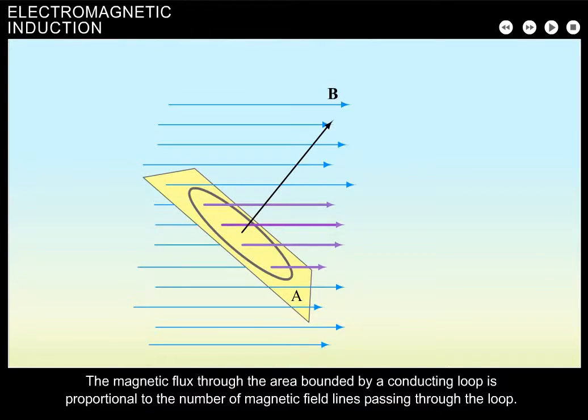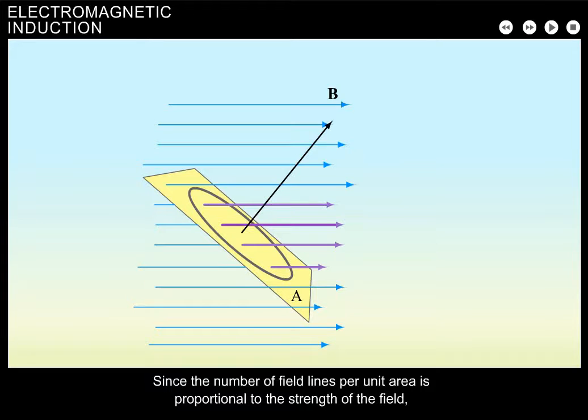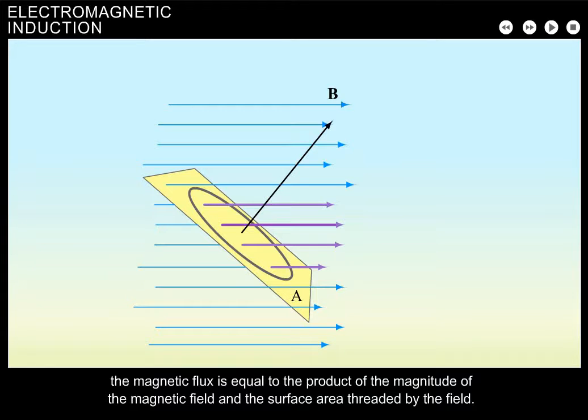The magnetic flux through the area bounded by a conducting loop is proportional to the number of magnetic field lines passing through the loop. Since the number of field lines per unit area is proportional to the strength of the field, the magnetic flux is equal to the product of the magnitude of the magnetic field and the surface area threaded by the field.